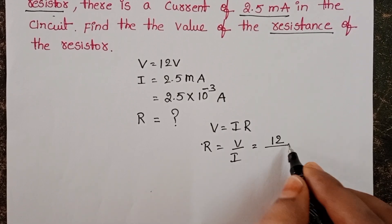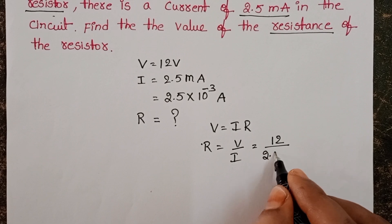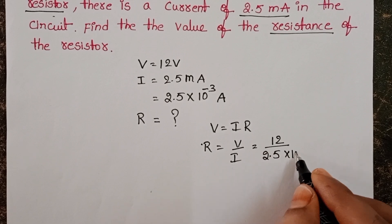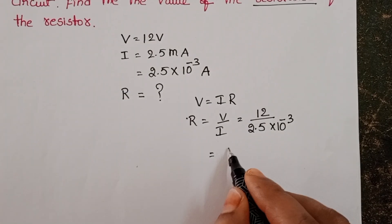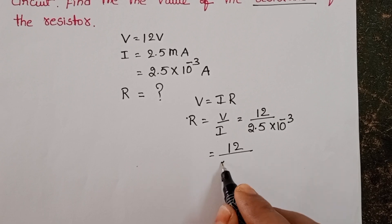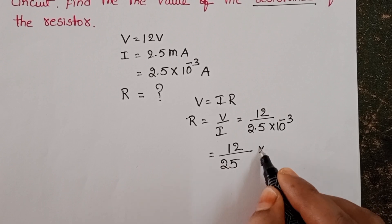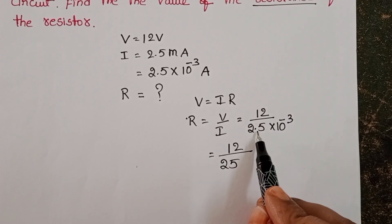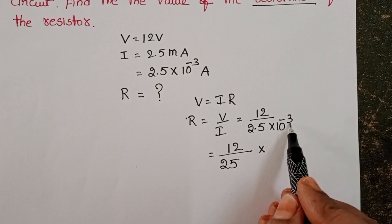Potential difference is 12 volts and electric current in the circuit is 2.5 into 10 power minus 3. 12 by 2.5. Here one decimal part is there, then it becomes 10 power minus 4.